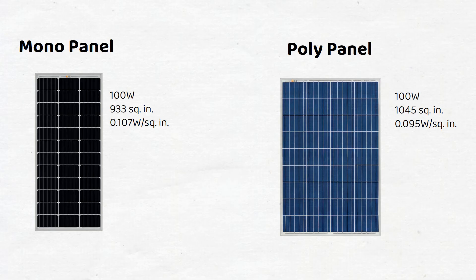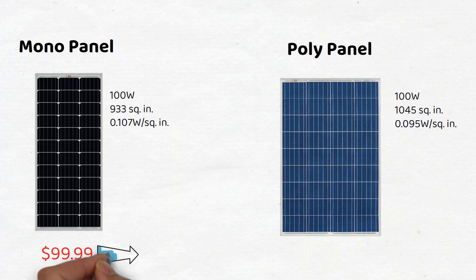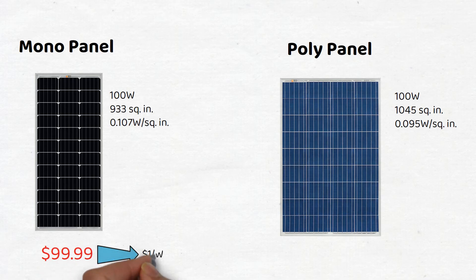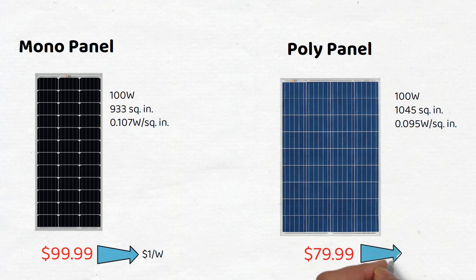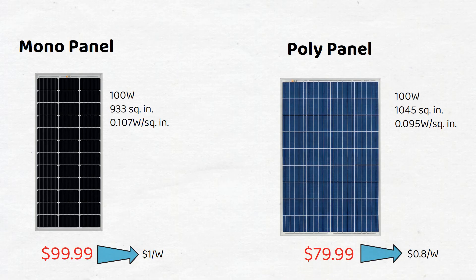So, choosing which panel you will get depends on the space you will have available. Do you have a small space where every square inch needs to be used, like a van or a boat? Choose mono. If space is not a constraint, like a rooftop, choose poly.